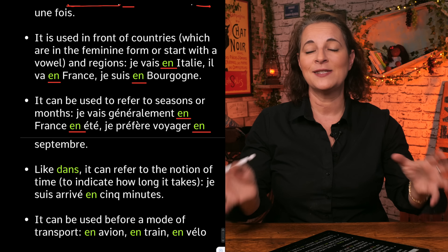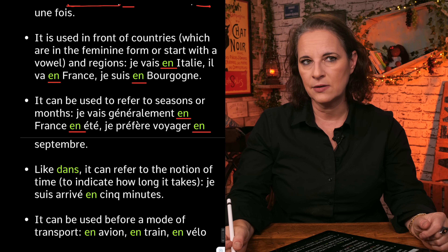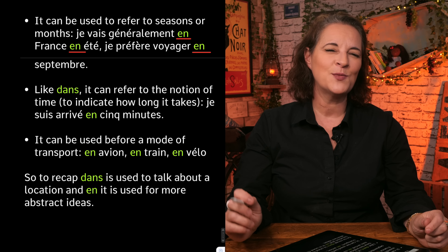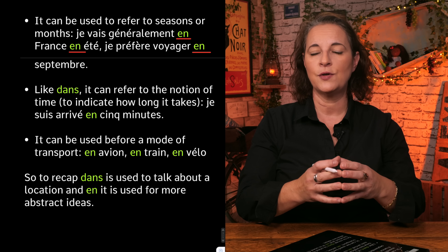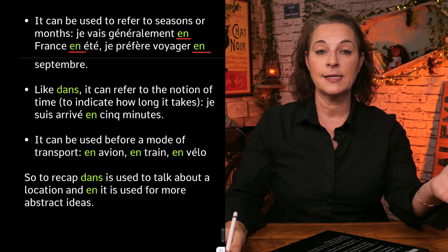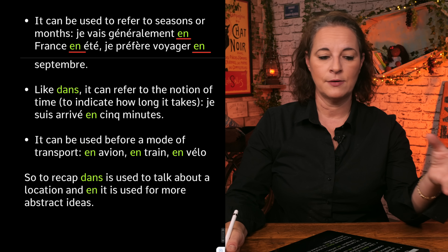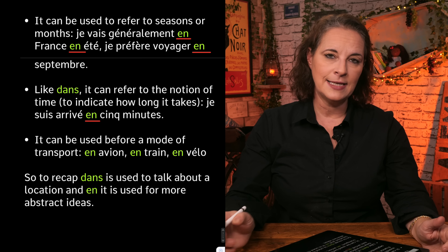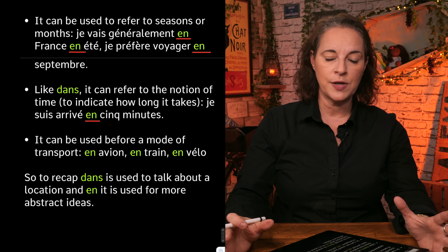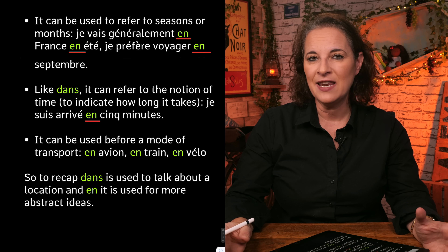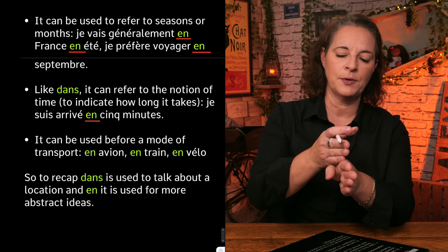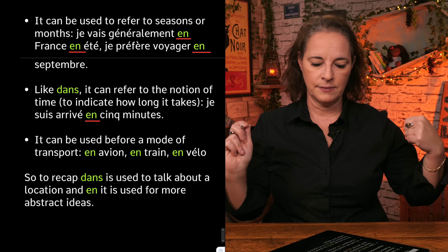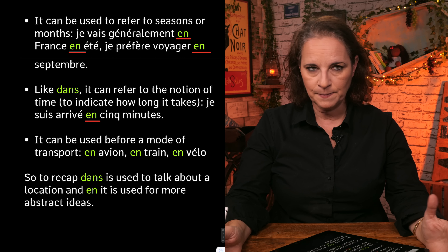I truly sympathize with how difficult it is to grasp this concept. Like dans, en can also refer to the notion of time — and this is where it becomes quite complex. Dans refers to the notion of time when talking about the future — what will happen. For example, je vais arriver dans cinq minutes — I will be coming in five minutes. But en indicates how long things take: je suis arrivé en cinq minutes — I arrived in five minutes. It's no longer what will happen in the future, but how long it took.